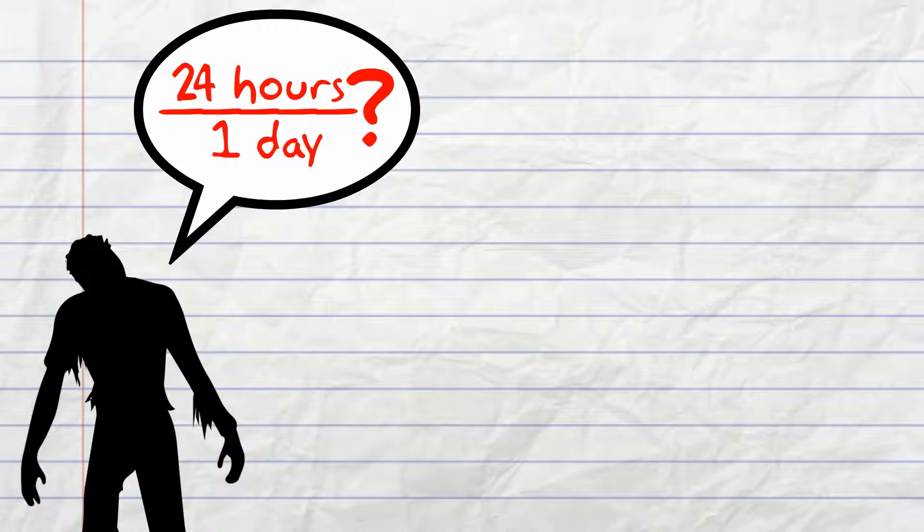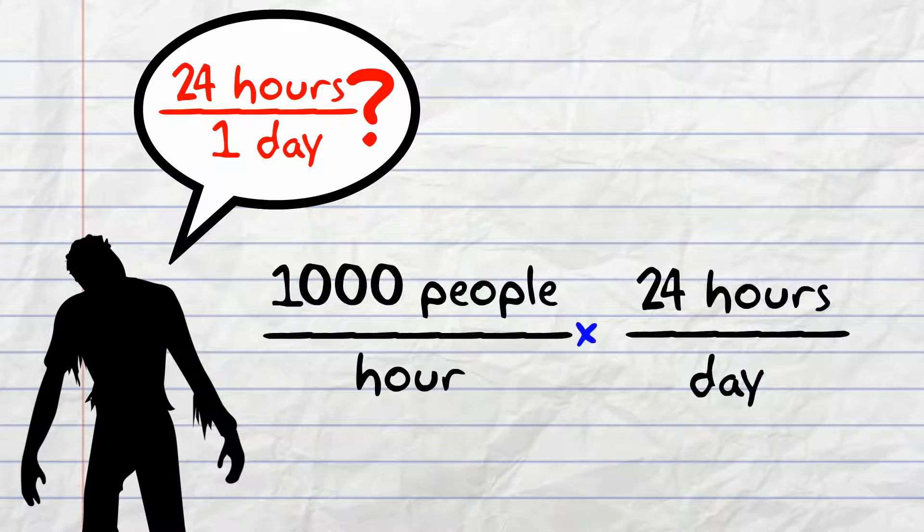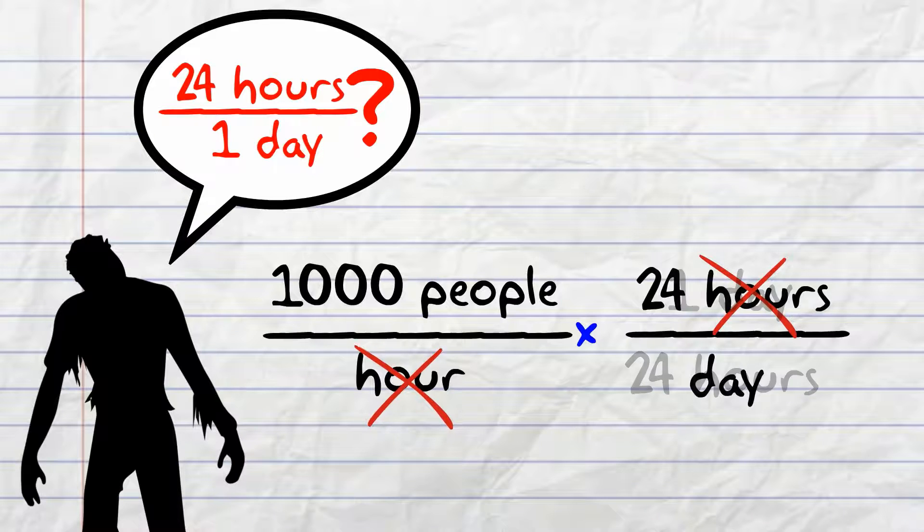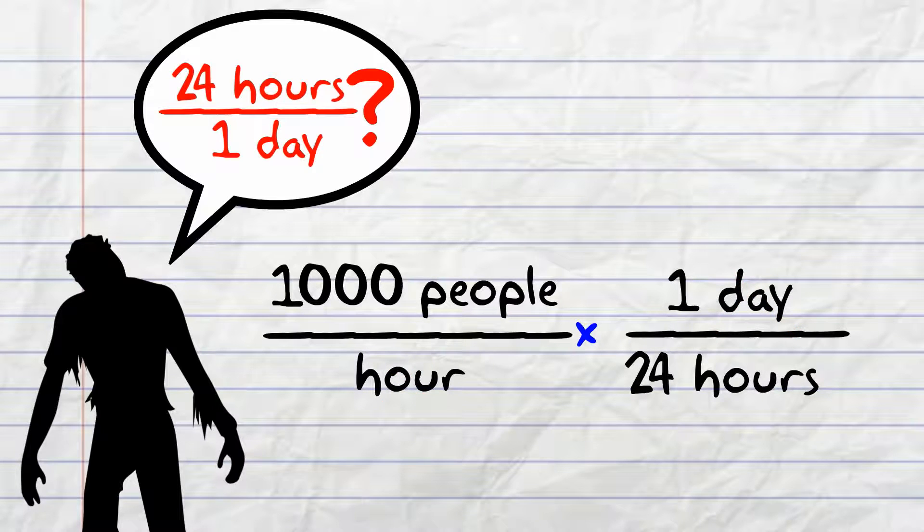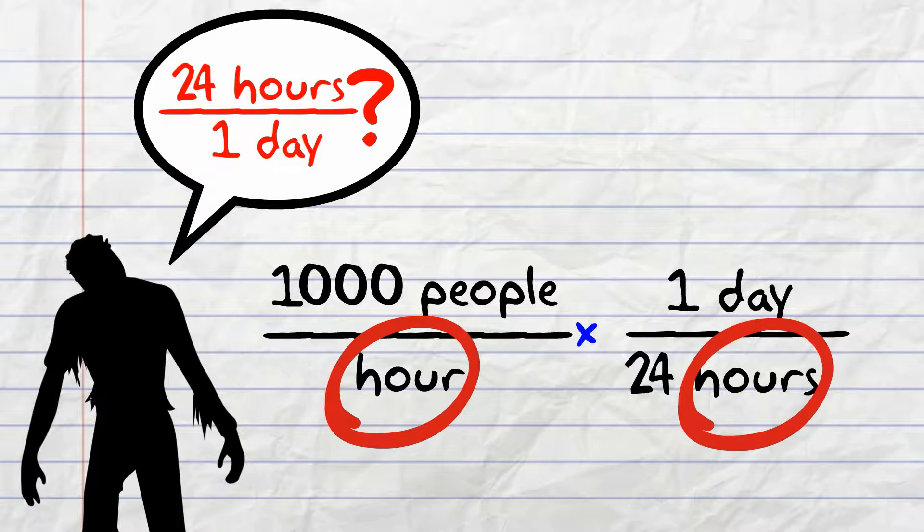Why 24 hours per one day? It's because we need to make sure the units divide out. We could multiply by one day per 24 hours. That's an appropriate conversion. However, the units don't cancel and the answer won't make sense.